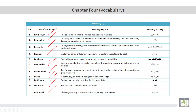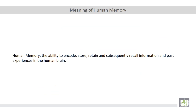You are strongly advised to study these words before you listen to the audio track, so you can be familiar with the content. Now let's move to the definition of human memory. Human memory is the ability to encode, store, retain, and subsequently recall information and past experiences in the human brain.